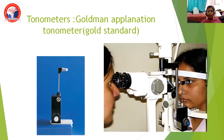These are the tonometers. The picture shows the Goldmann Applanation Tonometer, which is the gold standard. It is usually slit lamp mounted; it touches the cornea and gives two semicircular lines. The reading is taken when the two inner aspects of the two semicircular lines meet together. The disadvantage is that it touches the cornea.